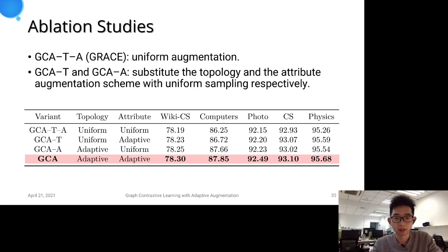From the table, we see that both topology-level and node-attribute-level adaptive augmentation schemes improve model performance consistently on all datasets.